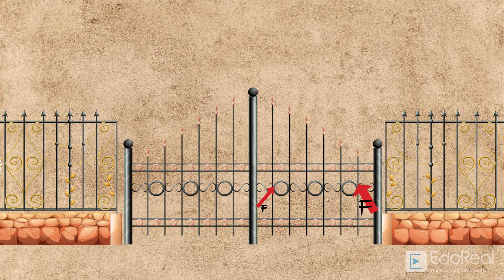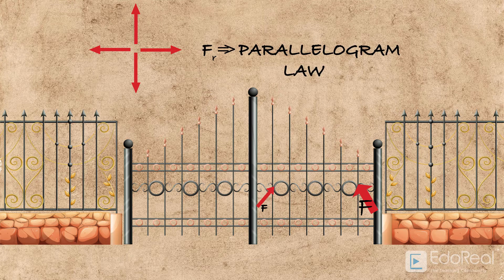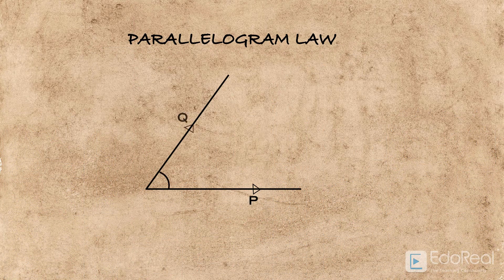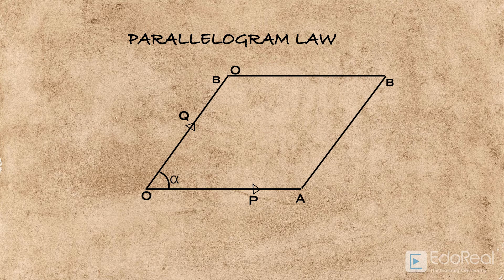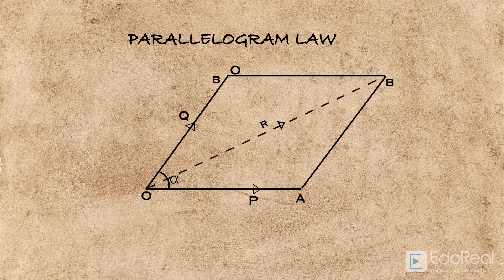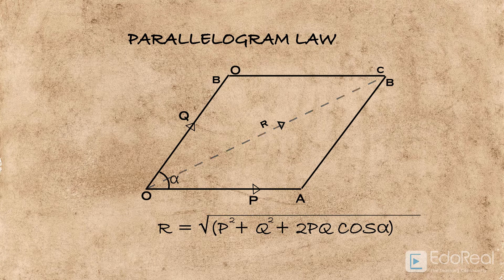As force has direction, it is a vector quantity. If forces are pointed in different directions, to get the resultant force we use the parallelogram law of vector addition. Let us consider two forces P and Q acting on a particle O. Force P is represented as vector OA, whereas force Q is represented as vector OB. Now, form a parallelogram using OA and OB. The resultant of these two forces will be obtained by the diagonal of the parallelogram, of which OA and OB are two adjacent sides. The resultant R is represented by OC in magnitude and direction. The magnitude of R is given by this formula.